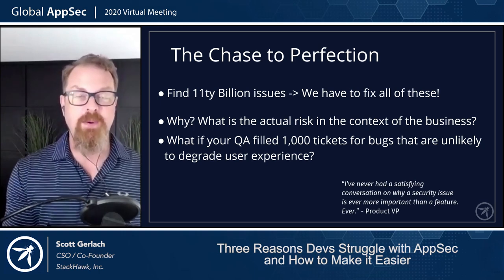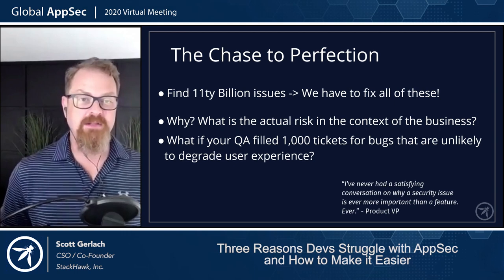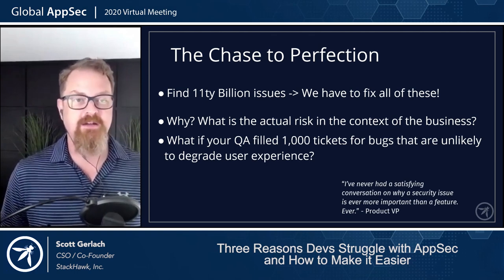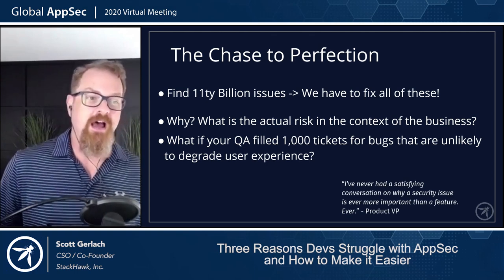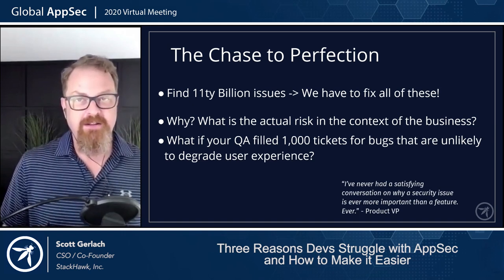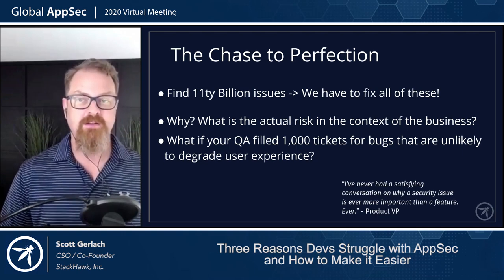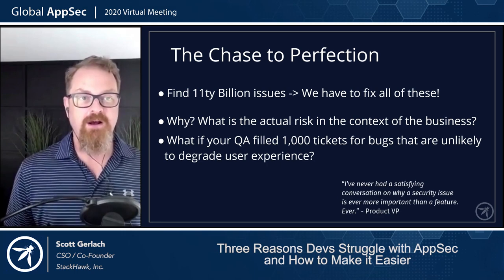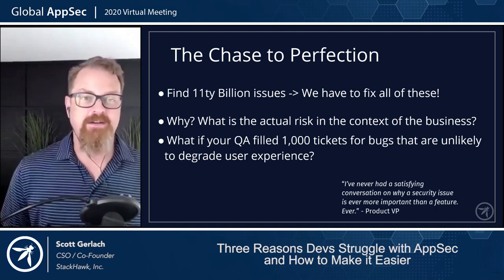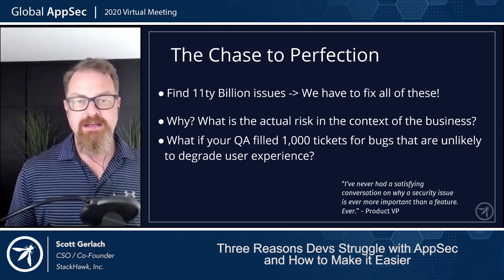Security teams need to be providing measured, informed risk guidance for the business to operate. The business is taking measured and informed risks, and security should be feeding into that, helping the business say we should maybe be taking this risk. One embodied statement here from a product VP: I've never had a satisfying conversation on why a security issue is ever more important than a feature. If that doesn't summarize what a bad job we're kind of doing — it could get hacked — if that doesn't embody the guidance we're getting and how we're doing it incorrectly, I don't know what does.